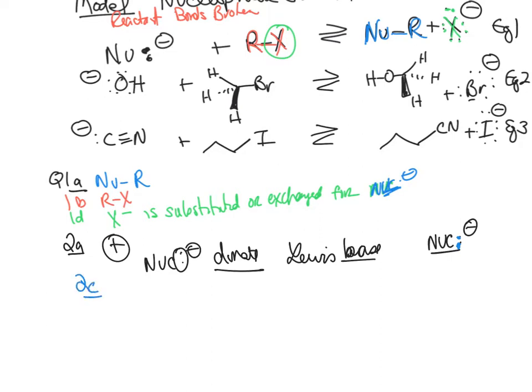For 2C, consider the C–X bond in Model 1 where X is a halogen. There is a delta positive on the carbon and a delta negative on X, indicating the direction the C–X bond is polarized. What part of the C–X bond will the nucleophile be attracted to? The nucleophile will be attracted to the delta positive, because the nucleophile loves a positive charge.